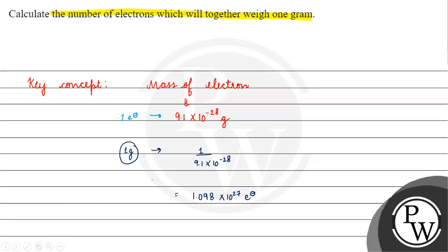Final answer for this question will be 1.098 into 10 to the power 27 electrons are present in 1 gram of substance. I hope you understood. Thank you and all the best.